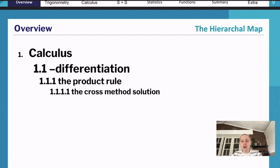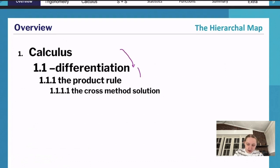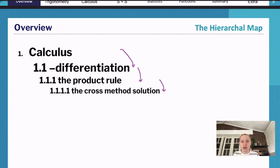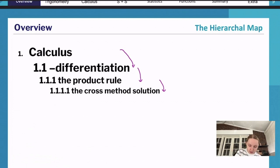The next part of our overview is the hierarchical map, which is a way to think about your maths syllabus. Each time you go down the hierarchy, you get more specific. For example: calculus is the broad topic, differentiation is a first-level specification, the product rule is a further specification, and then the cost method solution for the product rule is even more specific. The further down you go, the more likely that's what exam questions will actually target.